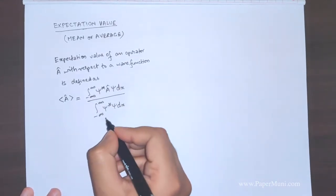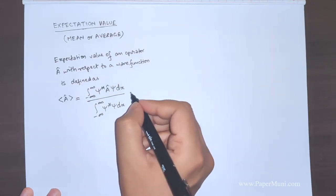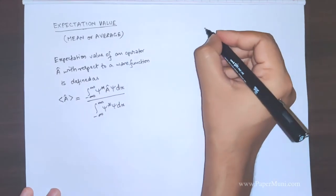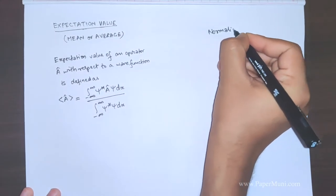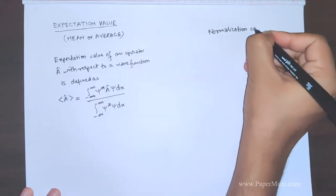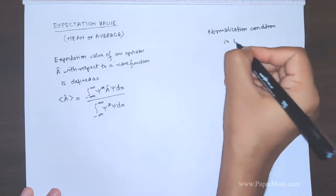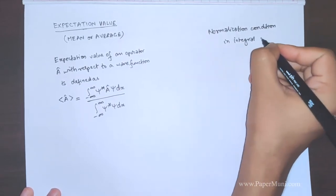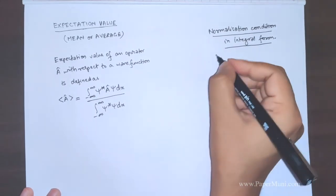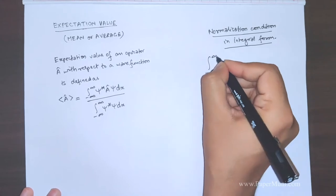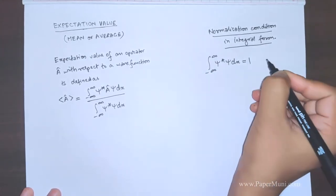Now this denominator is the integral form of the normalization condition. If you remember the normalization condition in integral form, it is the integral from minus infinity to plus infinity of psi-star psi dx equal to one.